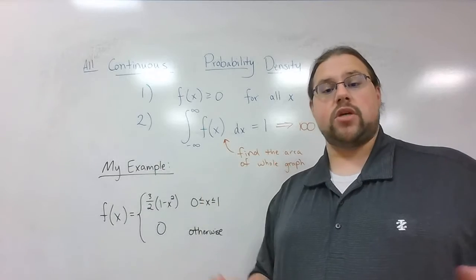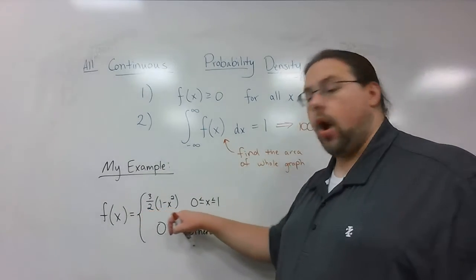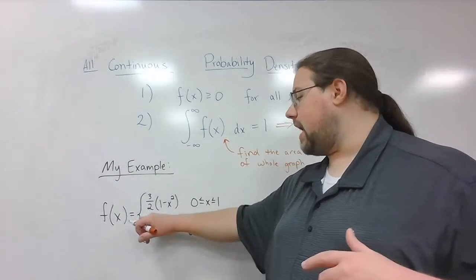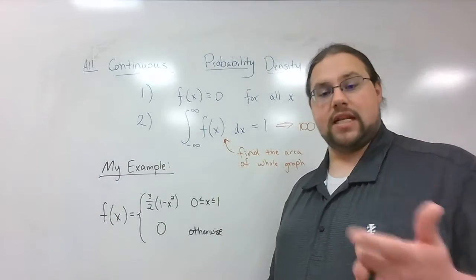Well, when I graphed it, it was all above the x-axis. So that's a good thing. This was all positive. So that means it fits the first part. Everything here is greater than or equal to 0. Everything there is greater than or equal to 0. Let's keep going.